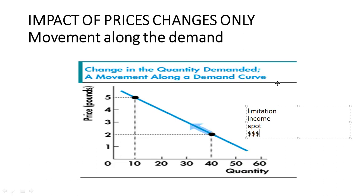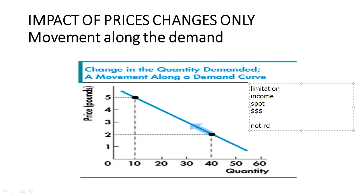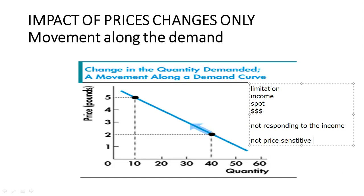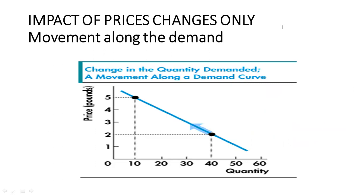If I'm not responding to income, then I'm not price sensitive — my decision is not affected by income. If income is not a big consideration, we call this a movement along the demand curve. But if I am price sensitive and take income into consideration, that is a different situation.